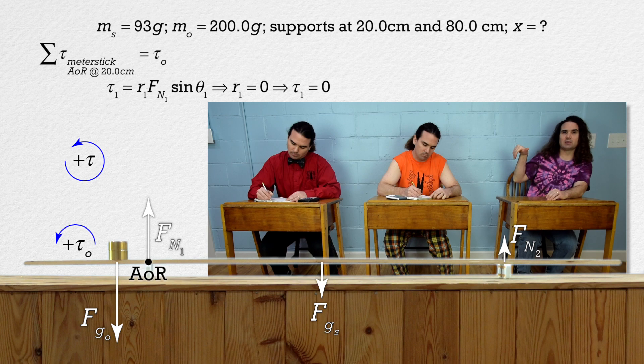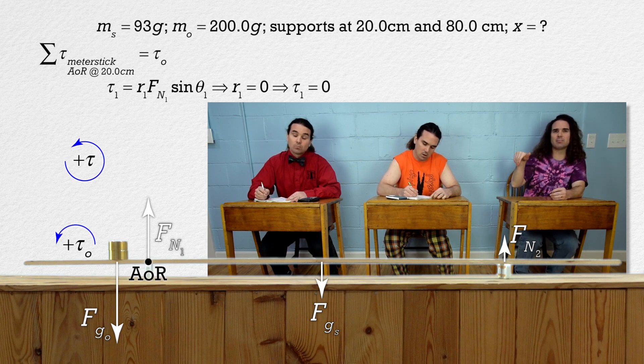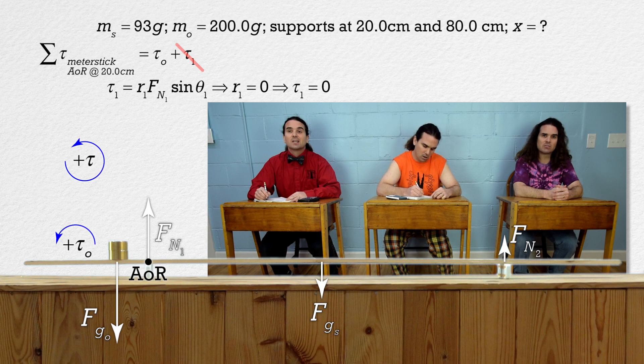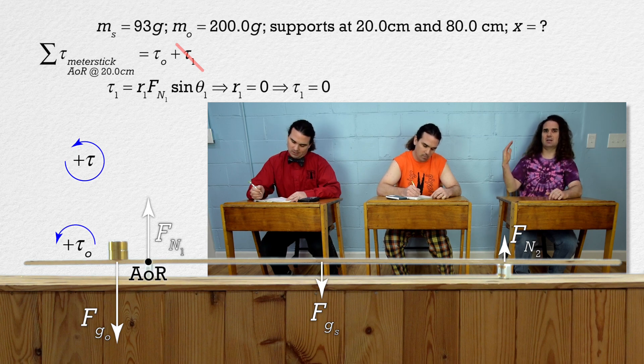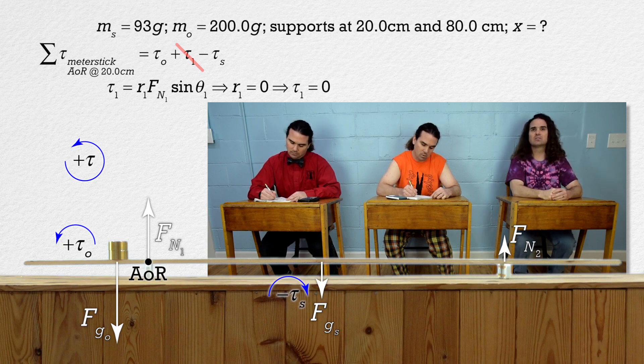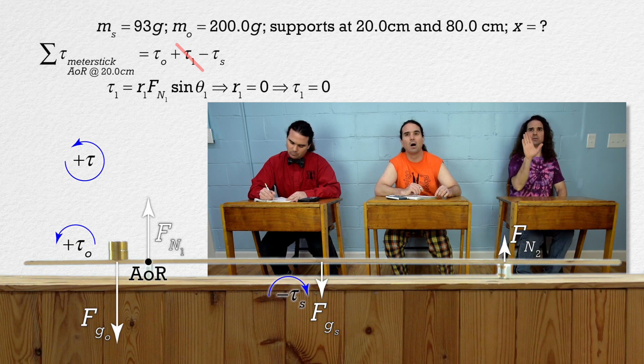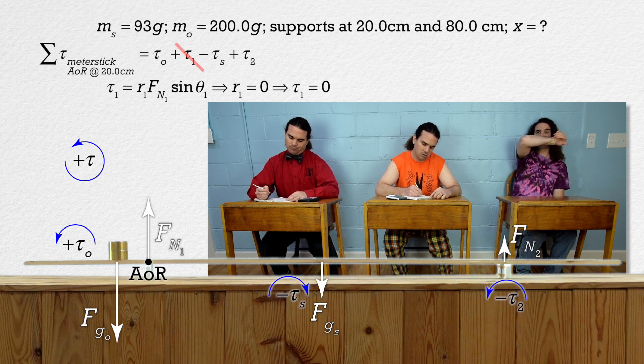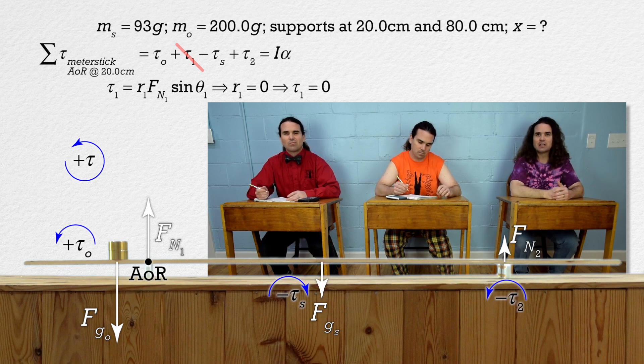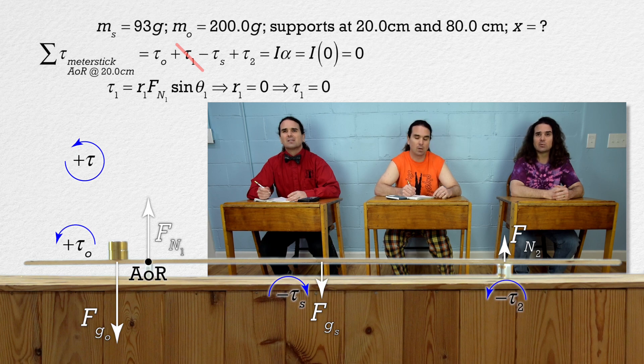Which is positive because it would cause the meter stick to rotate counterclockwise or out of the board. There is no torque caused by force normal one because that force acts directly at the axis of rotation. The torque caused by the force of gravity of the stick is negative because it would cause the meter stick to rotate clockwise or into the board. The torque caused by force normal two is positive because it would cause the meter stick to rotate counterclockwise or out of the board. That all equals rotational inertia times angular acceleration. The angular acceleration is zero so the meter stick is in rotational equilibrium because the net torque equals zero.